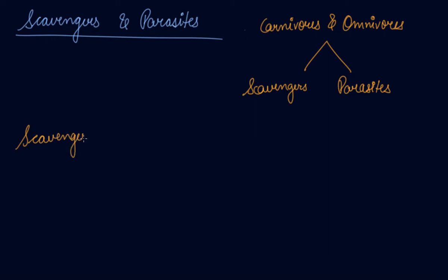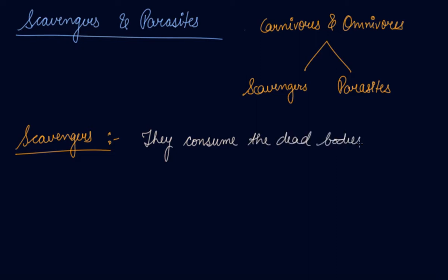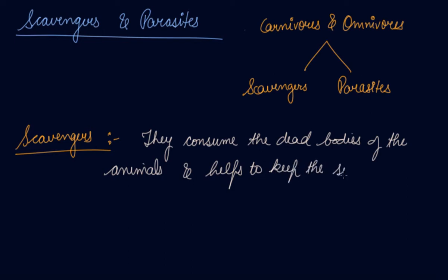What are scavengers? The main property of scavengers is that they help the environment to stay clean, as they consume the dead bodies of animals. Scavengers consume the dead bodies of animals and help to keep the surroundings clean. They keep your surroundings very clean just because they eat up or consume the dead bodies of animals.